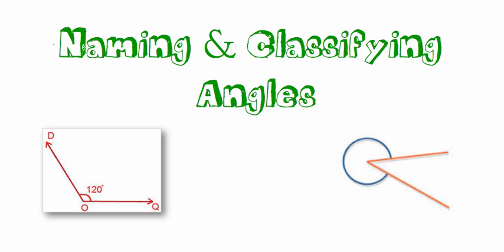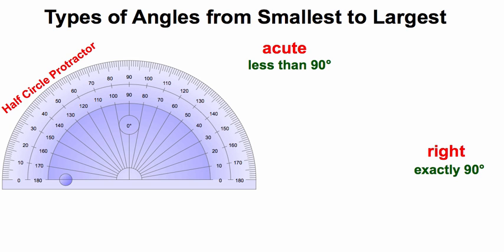In this video, we're going to be naming and classifying angles. We're going to start with our smallest type of angle, our acute angle, which is going to be less than 90 degrees.